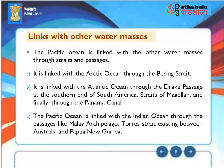Links with other water masses: The Pacific Ocean is linked with other water masses through straits and passages. It is linked with the Arctic Ocean through the Bering Strait, and with the Atlantic Ocean through the Drake Passage at the southern end of South America, the Straits of Magellan, and through the Panama Canal. The Pacific Ocean is linked with the Indian Ocean through passages like the Malay Archipelago and Torres Strait, existing between Australia and Papua New Guinea.